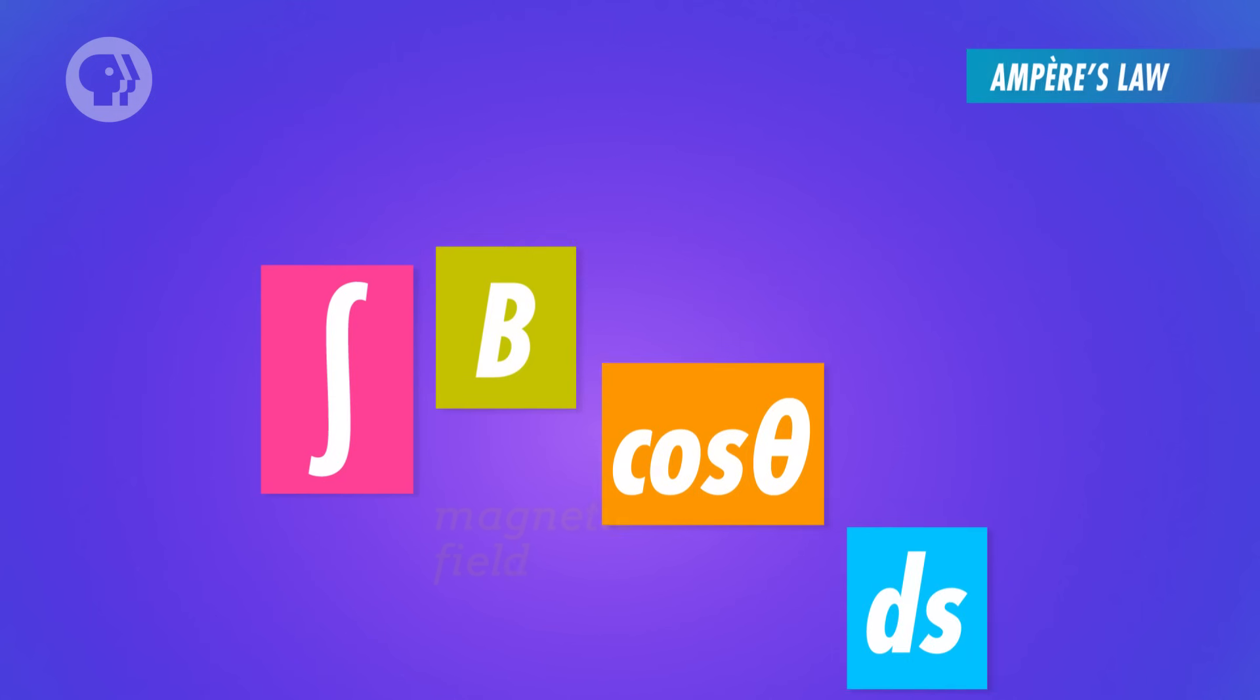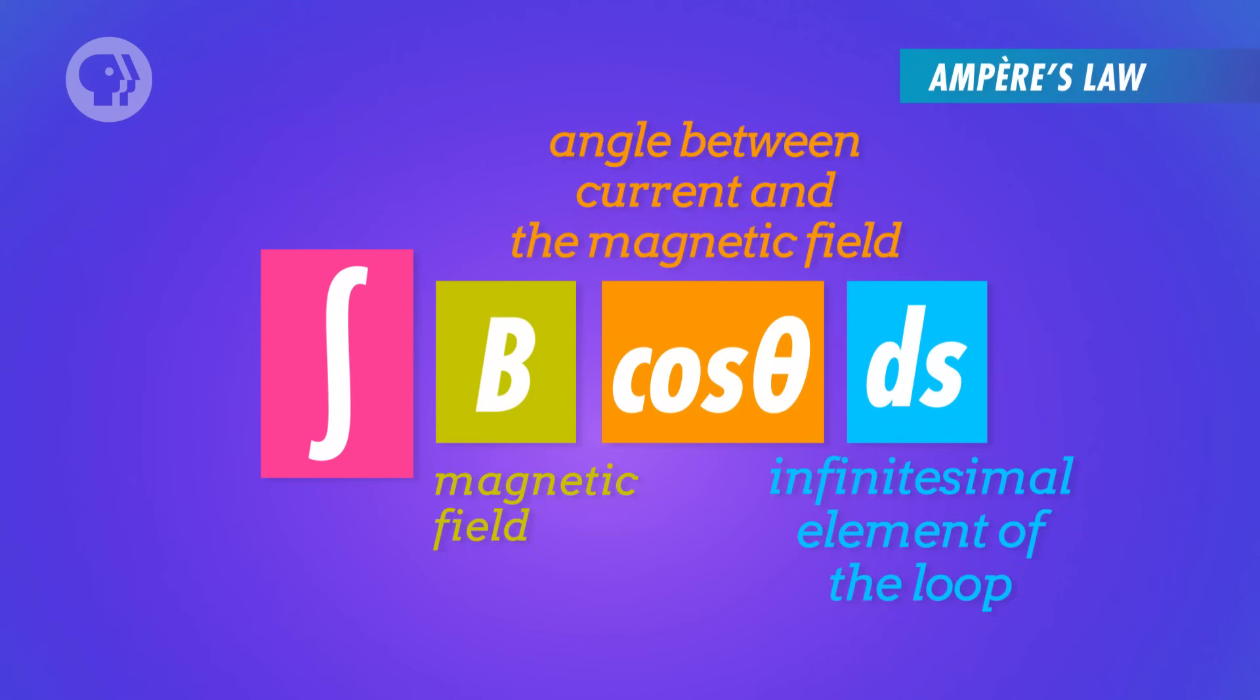So first, let's solve the integral in Ampère's law to get the total magnetic field along the circle. According to the law, we're solving the integral of the magnetic field times the cosine of theta with respect to the points along the circle.